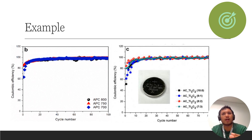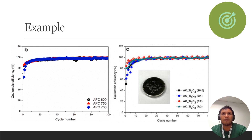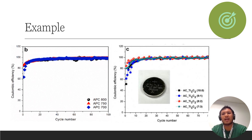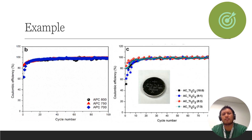In conclusion, a coulombic efficiency close to 100 percent means your material is good, because it shows a very good reversible process — it can go through charging and discharging at the same rate. That's all; it's quite simple to calculate the coulombic efficiency. Thank you.